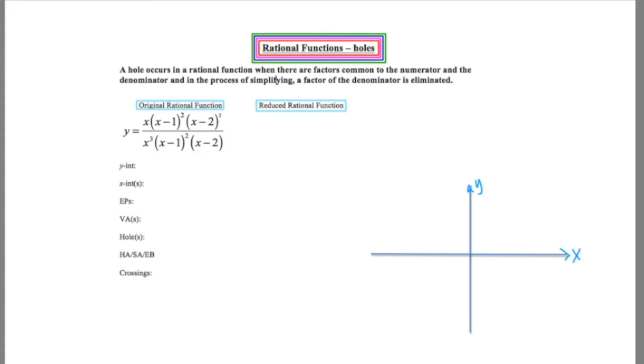This is the second video on how to graph rational functions that contain holes. I cannot wait to get into this. Remember that a hole occurs when there are factors that are common to both the numerator and the denominator, and some of them cancel out.